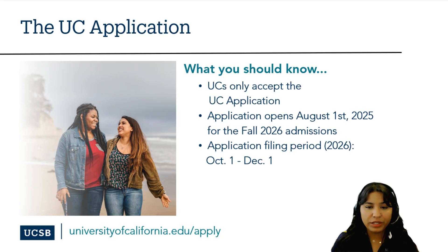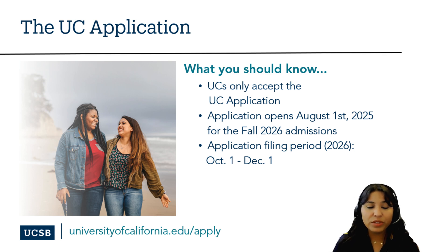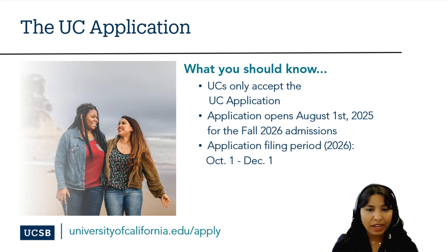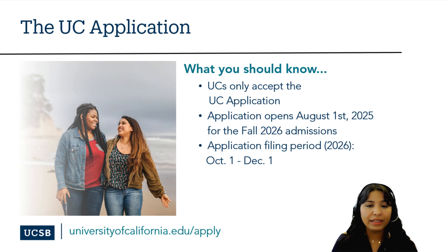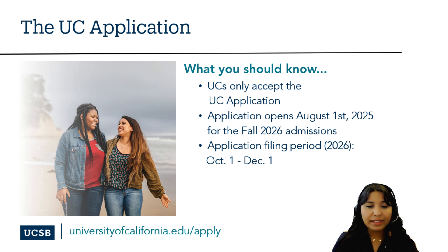What you should know about applying to the University of California is that the UC application is the only application that the University of California will accept for admissions. The application is only available online at universityofcalifornia.edu. The UC application opens on August 1st; however, applications may only be submitted during the fall 2026 application filing period between October 1st through December 1st. It should be noted that applications are not reviewed on a first come, first served basis. And lastly, communications with all applicants will occur primarily through email. Students will need to ensure that the email account they use for their application is one they will regularly check even after the application deadline.